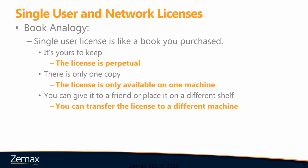You could think of it like a book. A single user license is like a book that you've purchased — it's yours to keep. There's only one copy, so it can be used by one person at a time, but you could give it to a friend or place it on a different shelf. In licensing terms, the license is yours, you've purchased it, and it's perpetual, but the license is only available on one machine at any one time. You could transfer the license to a different machine if needed.